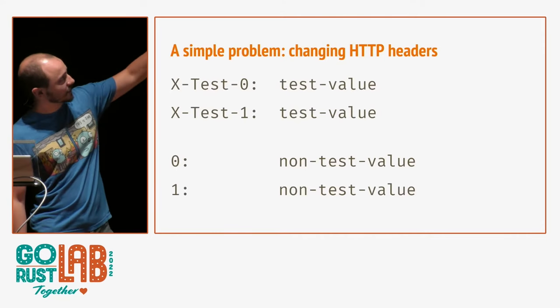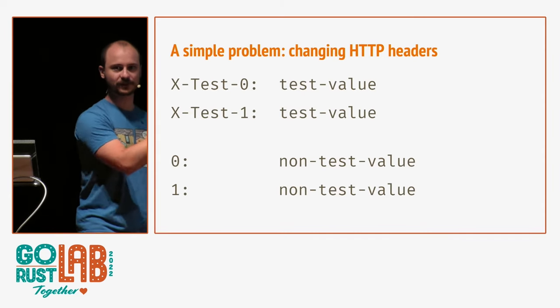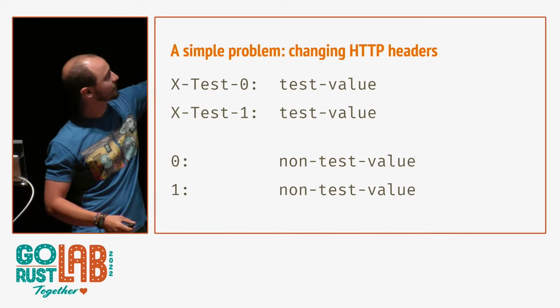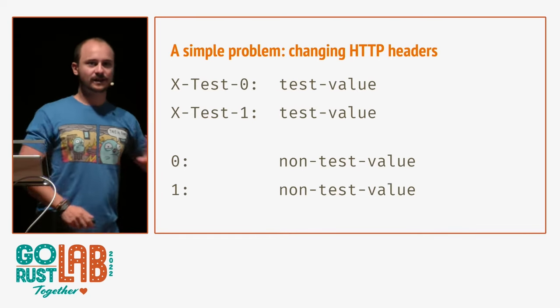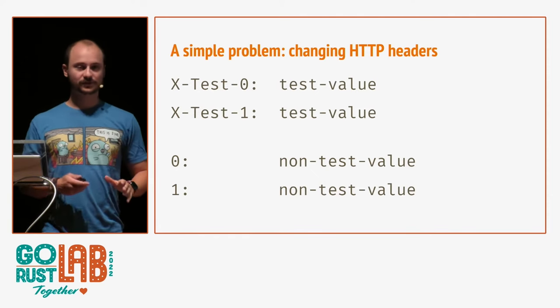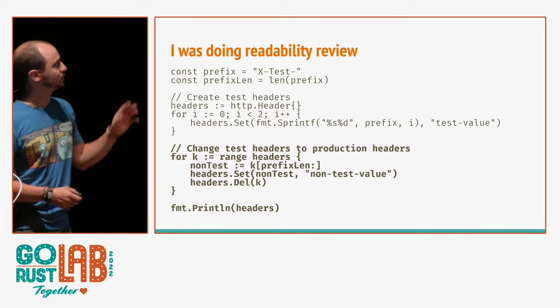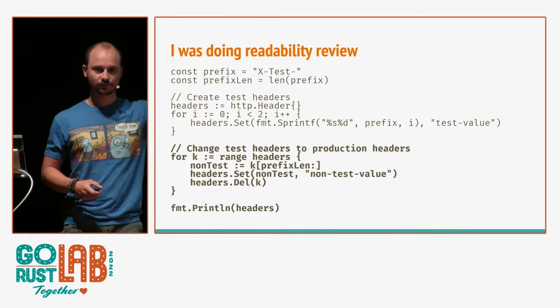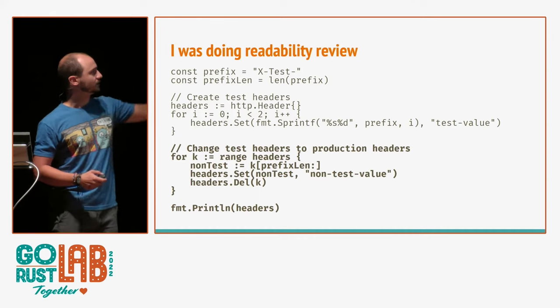There was some code that needed to do a simple task: take a couple of HTTP headers called X-test-something, and turn them into non-test headers by taking the suffix — in this case zero and one — and putting them in their place as the header keys. It would range over the headers, remove the X-test prefix, set the new key with the non-test value, and delete the test one.